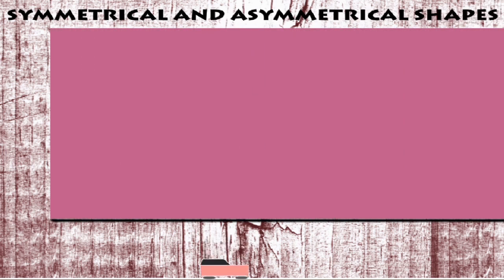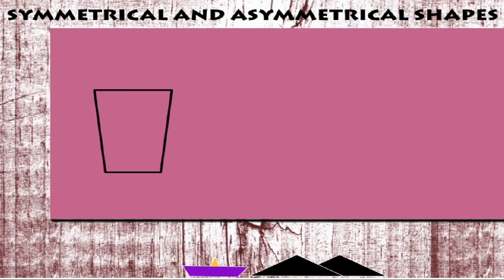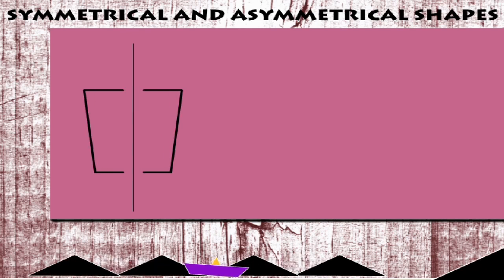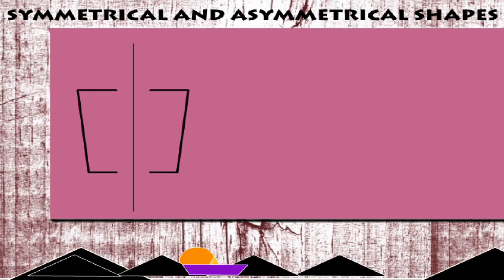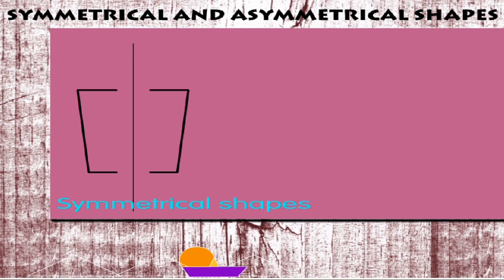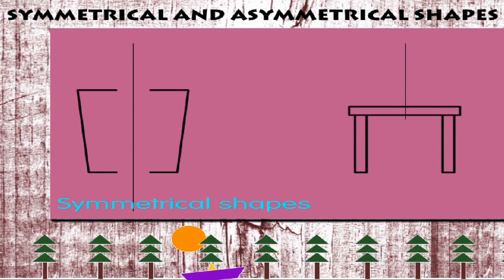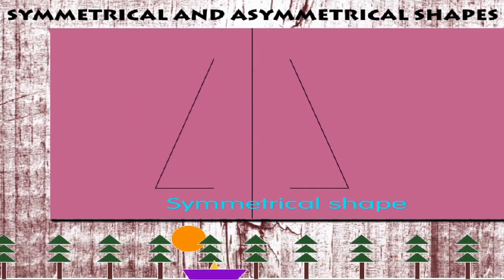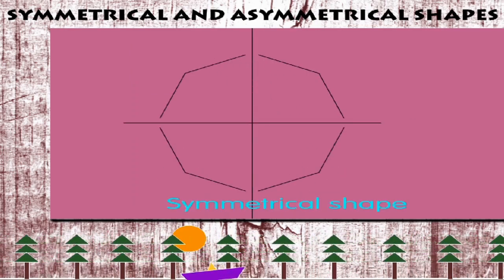Symmetrical and Asymmetrical Shapes. Shapes that can be divided into at least two equal halves that are mirror images of each other are called symmetrical shapes. Here are some shapes. A tumbler, a stool, a triangle, and an octagon.